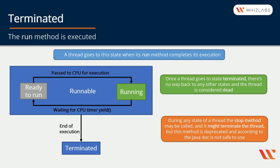There is something omitted in the diagrams. During any state of a thread, the stop method may be called and it might terminate the thread. But this method is deprecated and according to the Javadoc, it is not safe to use, so we won't discuss this possibility. At this point, you are probably thinking: we are talking about some methods here and the only one I know is start — to start the thread — and run, to hold the logic.